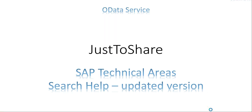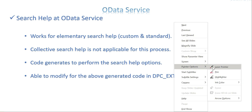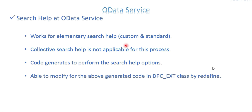The search help works for elementary search help only. This is the search help which you already have in your backend system database, like the data dictionary. Those search helps you are able to access or use in this process. It can be a custom or a standard search help. The only restriction is we normally have two types: elementary and collective. This works only with elementary as of now. Collective search help is not applicable — even if you try to give a collective search help, you will get an error in the initial stage itself.